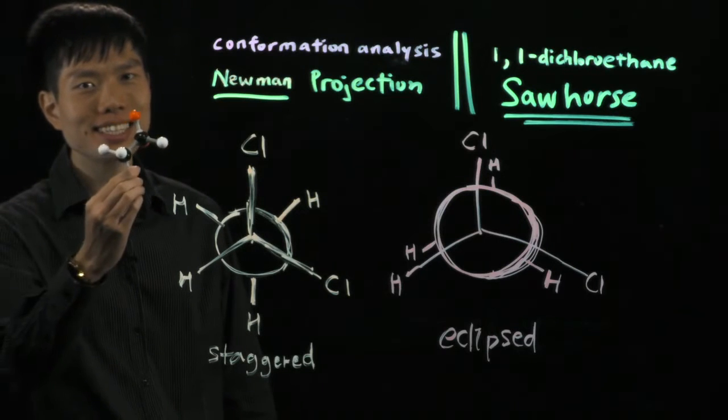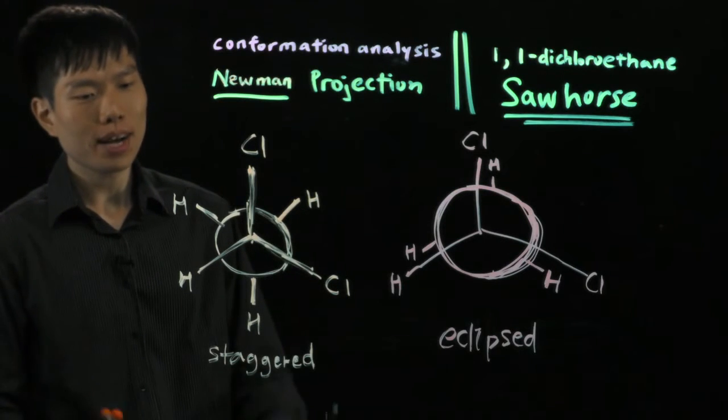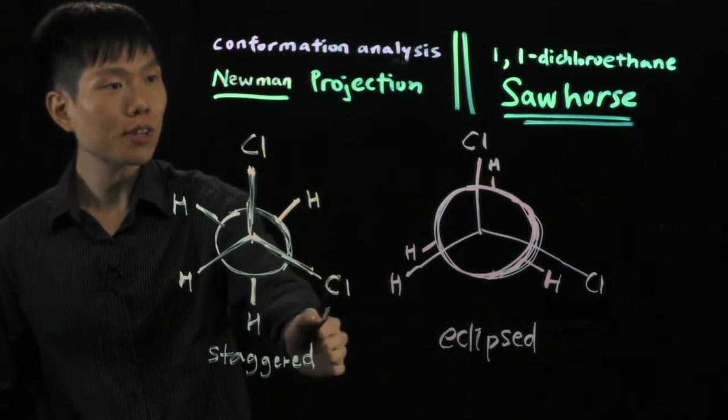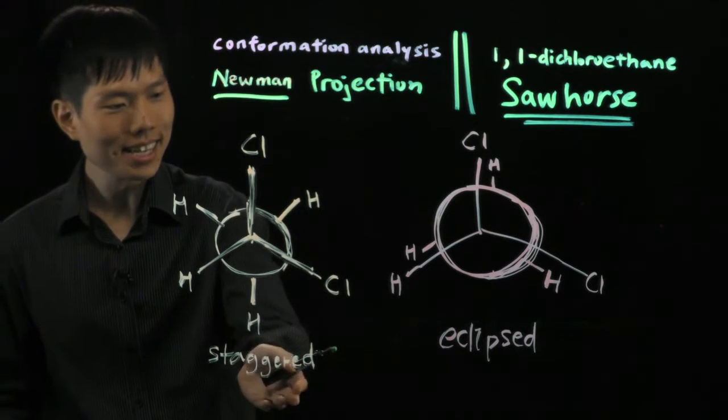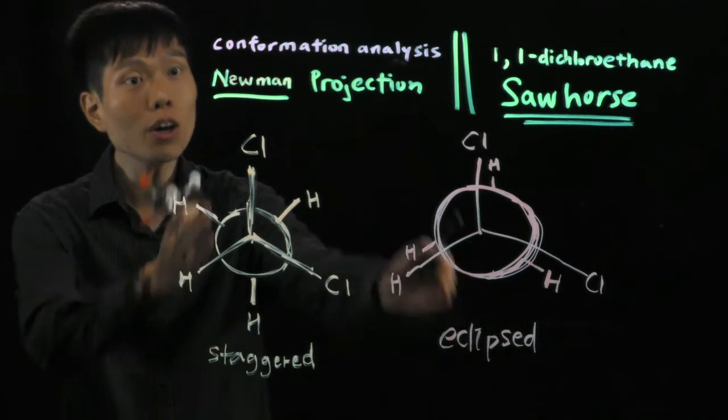And again, in my hand, that's the molecule. Now, as I've shown you just now, there are two different conformers of 1,1-dichloroethane - the staggered and the eclipsed - and these are your Newman projections.